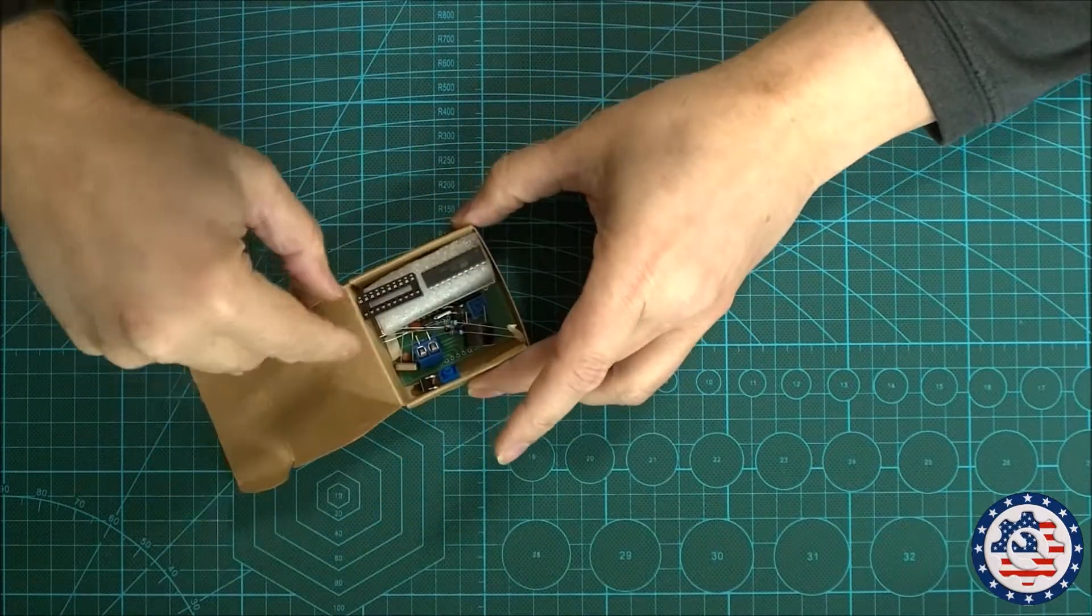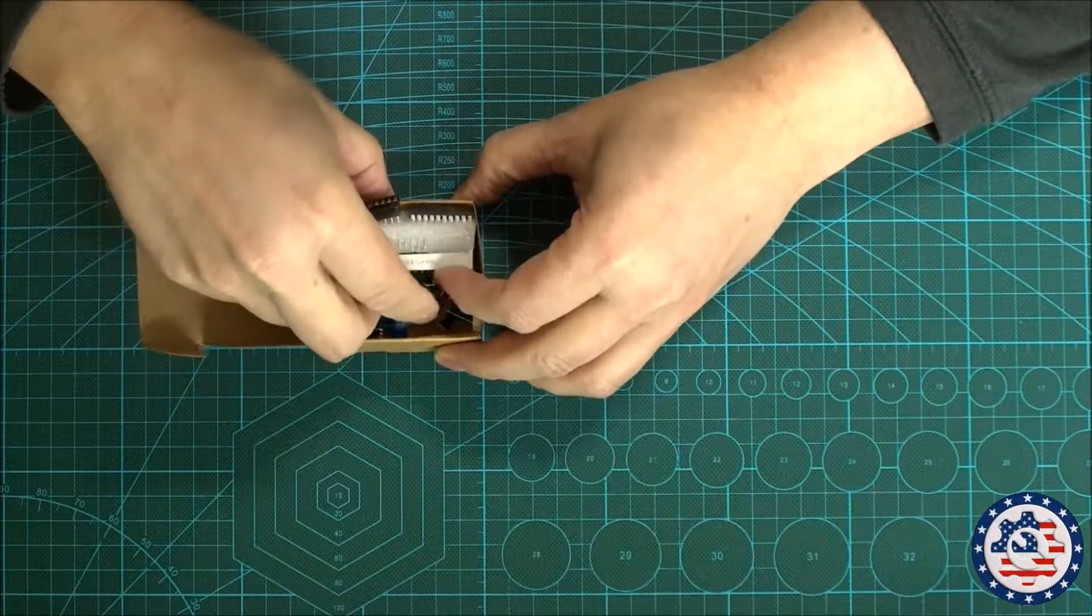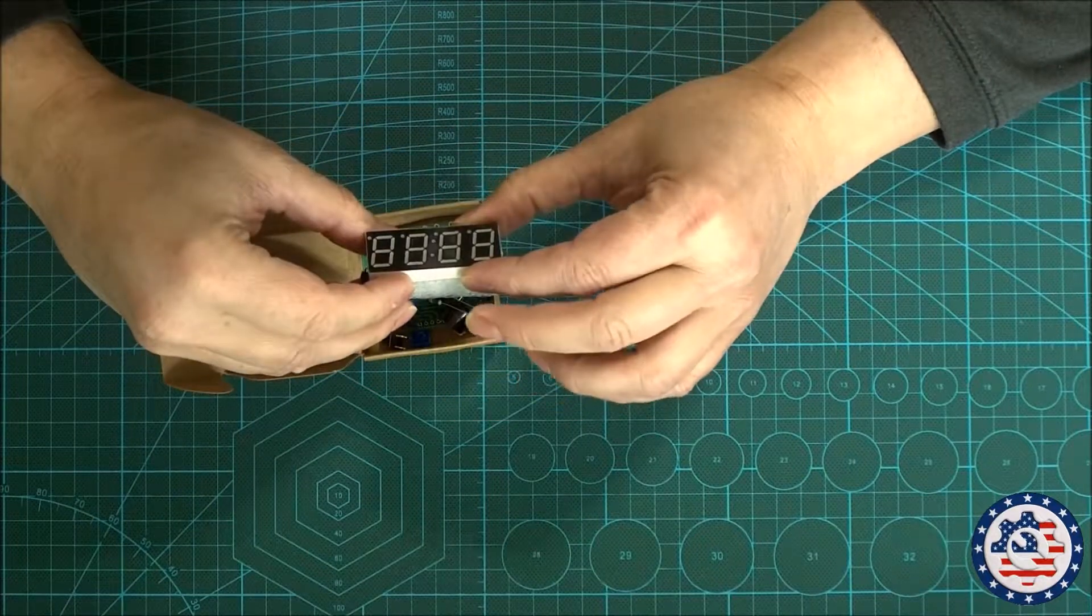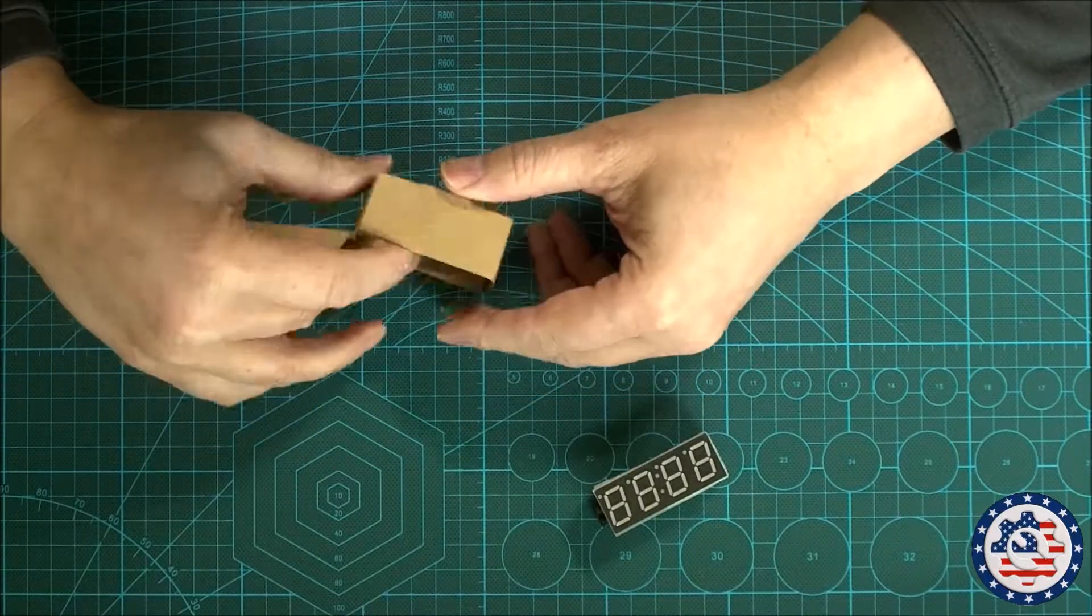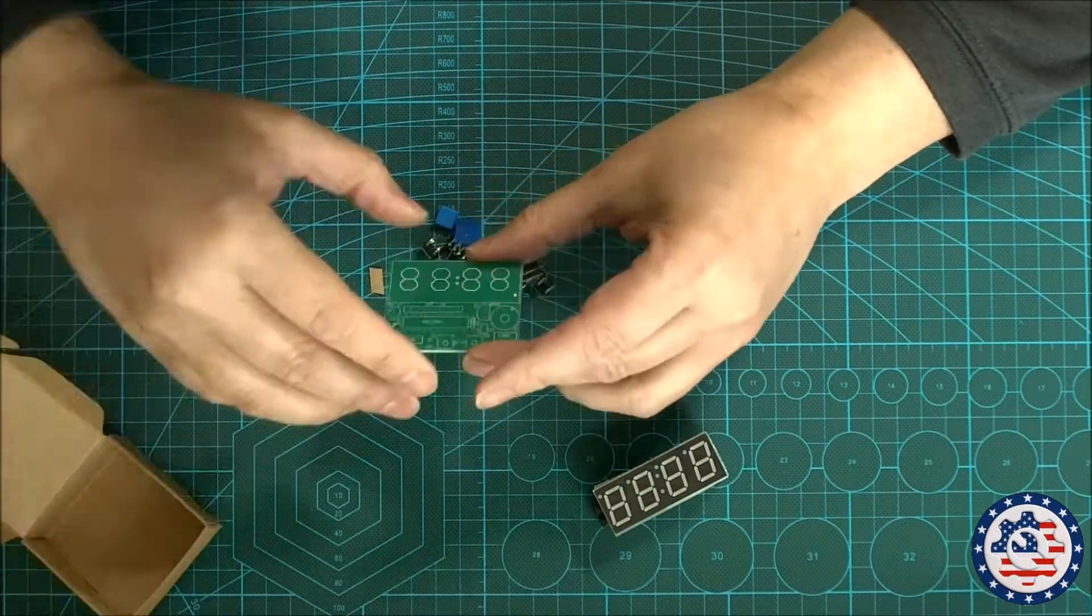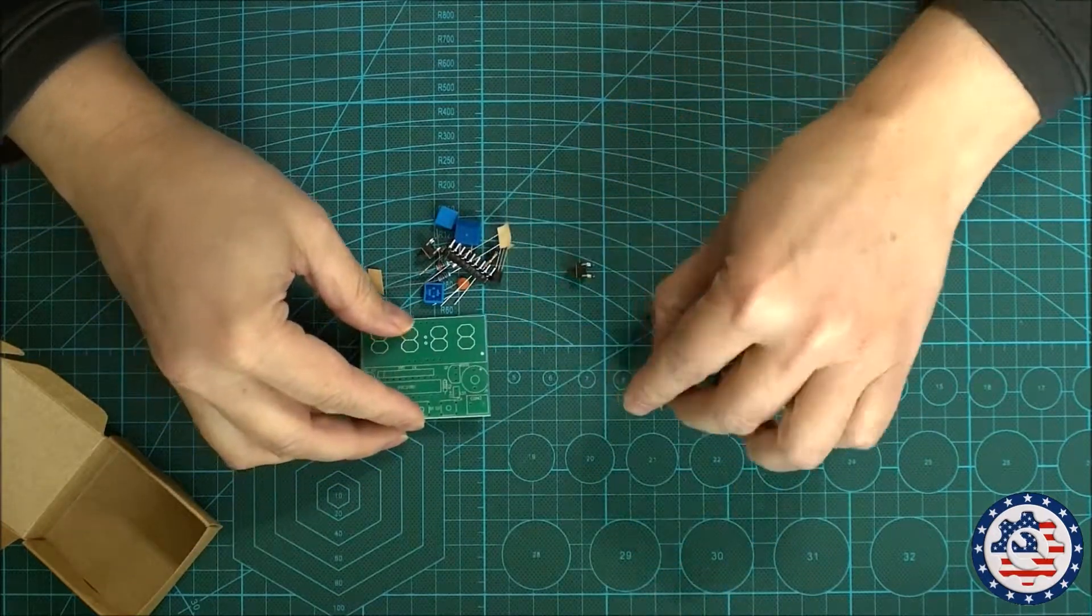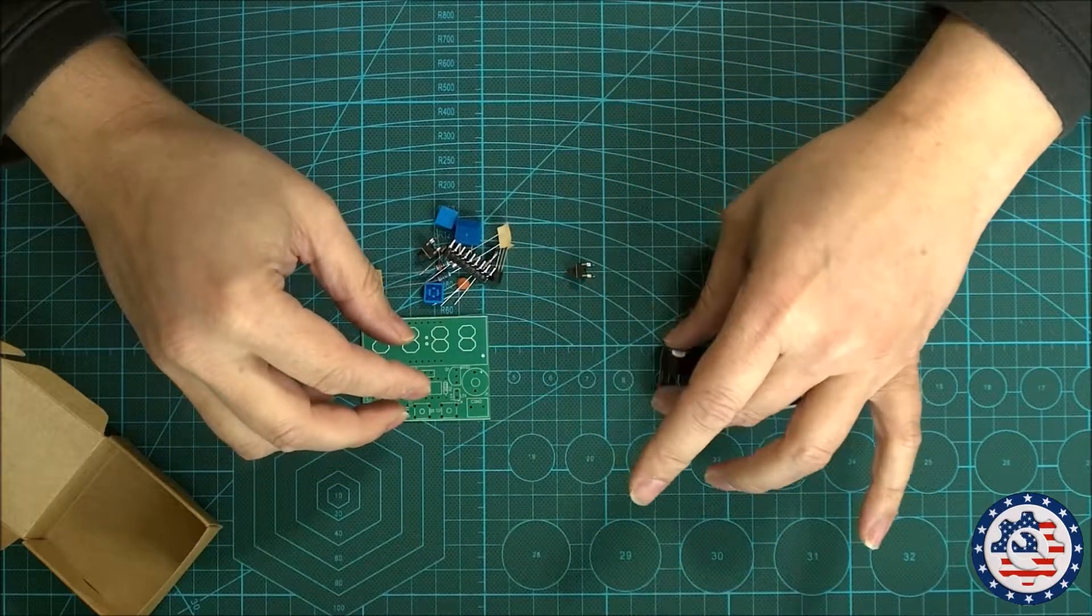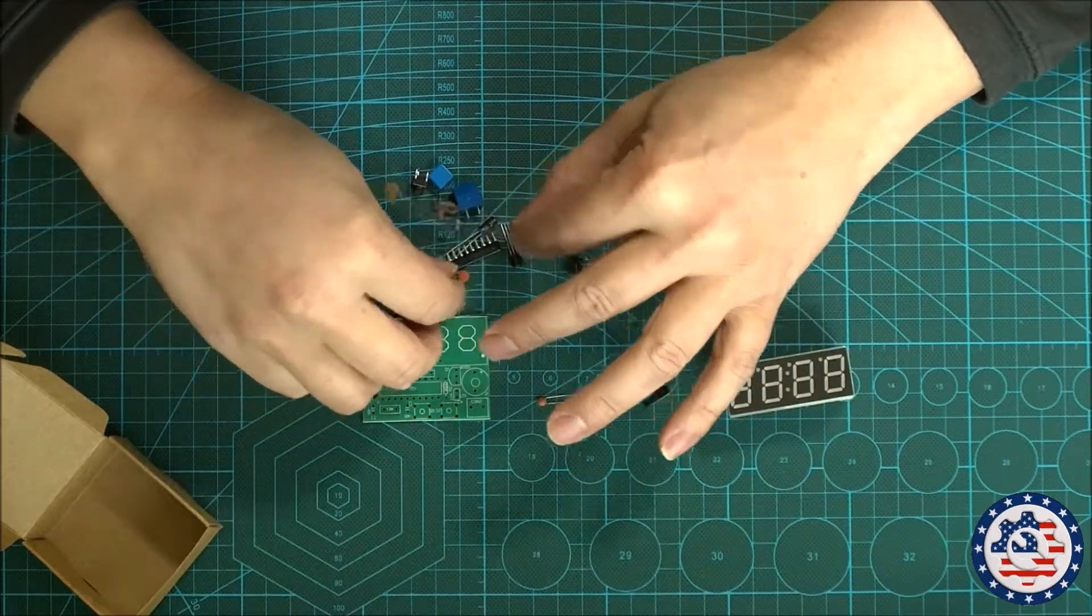Okay, so I have an Atmel chip and a seven segment display. I think I know what it is. It's a DIY clock kit. I believe this has got some alarm functionality as well. So let's have a quick look at all the components to make sure that we have everything.